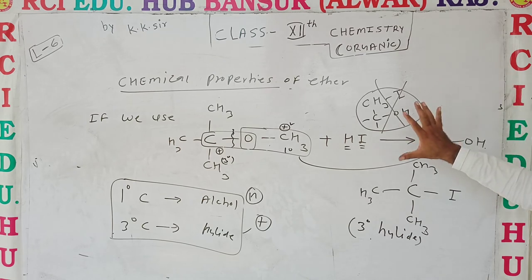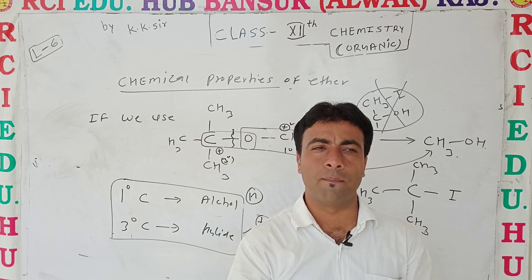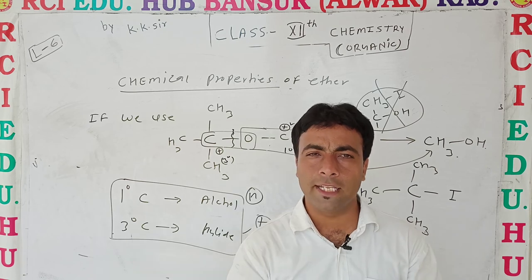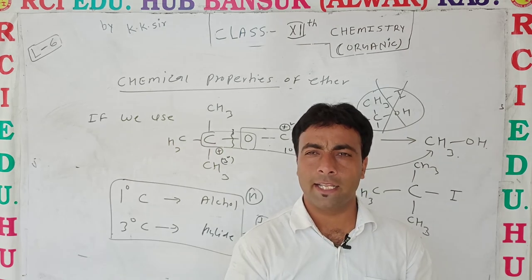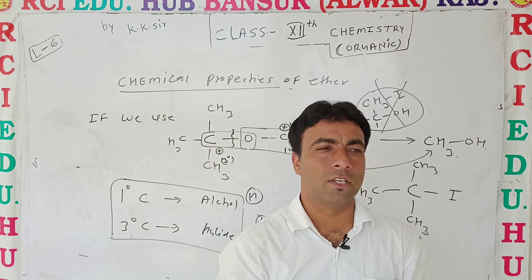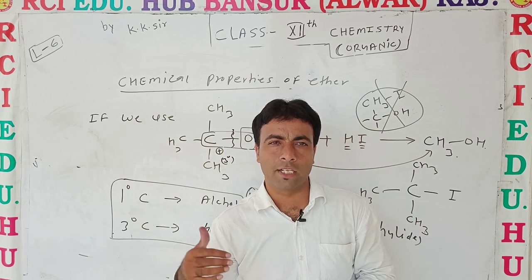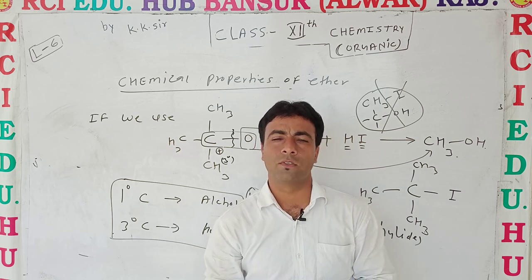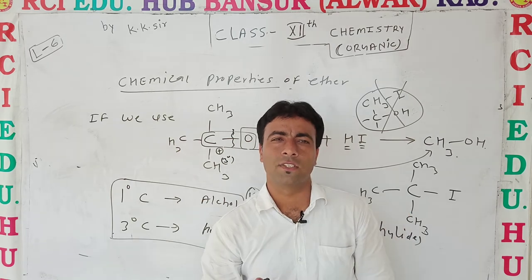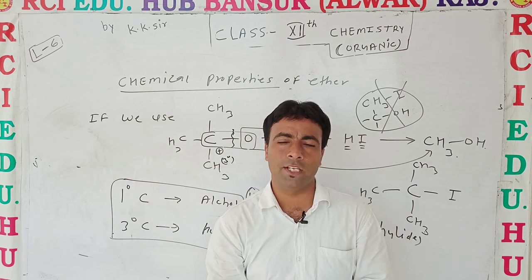Today we complete the Zeisel method and also finish Unit 2 — oxygen-containing compounds, Part 1 — which includes alcohol, phenol, and ether. This unit carries mostly four marks. There will be different types of questions from these parts; notes with previous year exam questions are already provided. Focus mainly on the important chemical reactions.